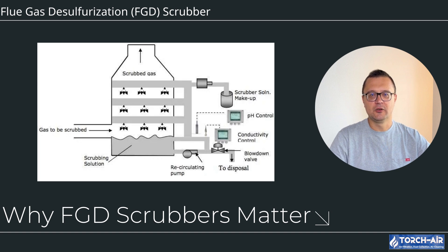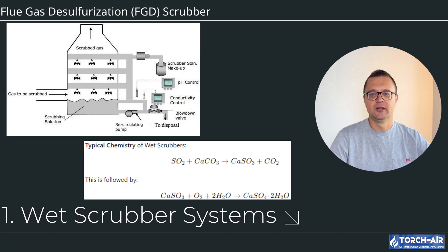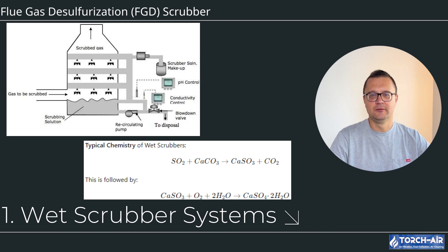Now let's dig into how these systems work, the technology behind them, and which models might suit your needs. FGD scrubber design: the basic design of a flue gas desulfurization system revolves around the use of a wet scrubber or a dry scrubber to remove sulfur dioxide from exhaust gases. Here's an overview of how the design typically looks.